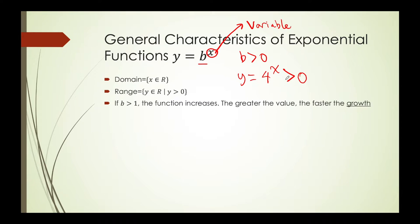We also notice that if the b value is greater than 1, then the function will be increasing. Using the same example, y is equal to 4 to the x — that means that we're multiplying the outputs by 4 each time, which means that it is obviously increasing the whole time, which means it is a growth.